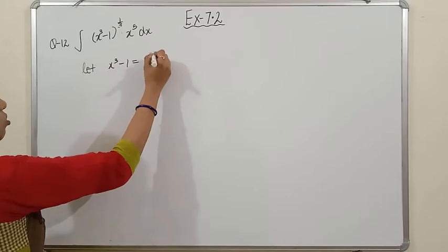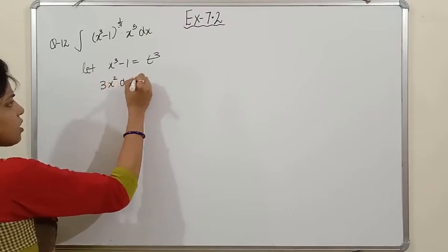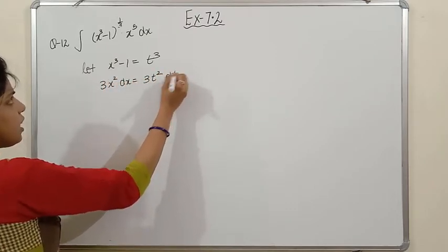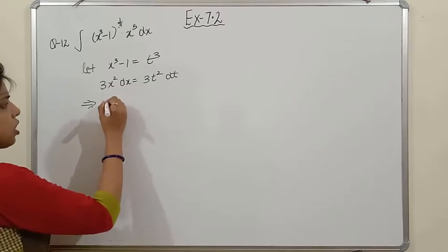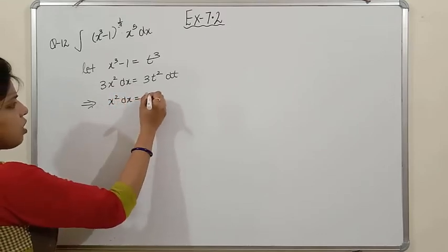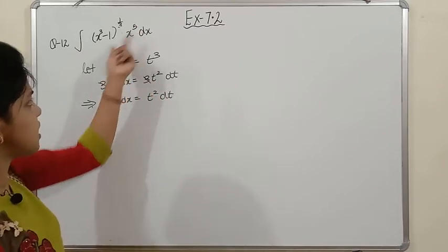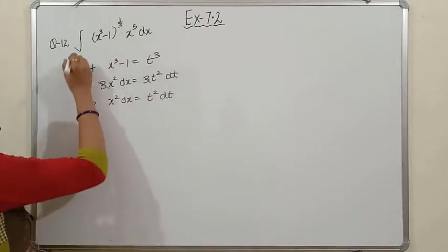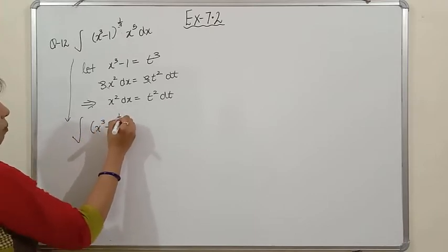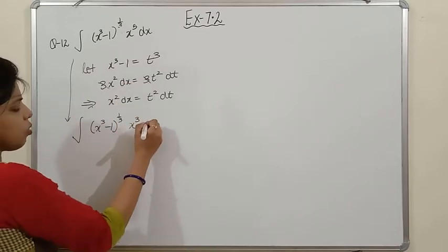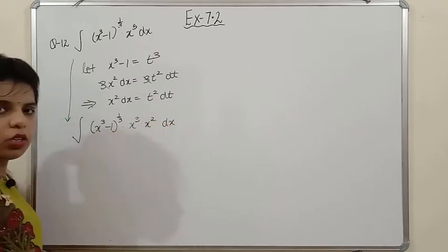So let x³ − 1 = t³. Differentiating both sides: the derivative of x³ is 3x² dx = 3t² dt. Cancelling 3 from both sides gives x² dx = t² dt. Now notice that in the question we have x^5 = x³ · x², so we can split x^5 into x³ · x², and write the integral as ∫(x³−1)^(1/3) · x³ · x² dx.